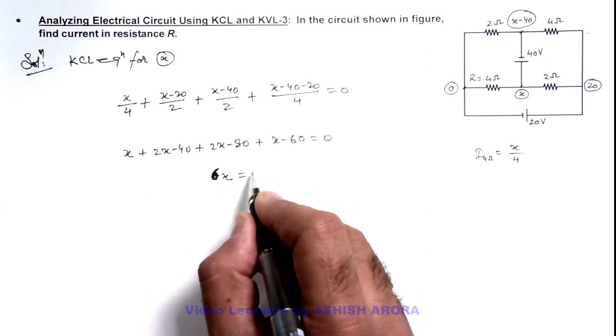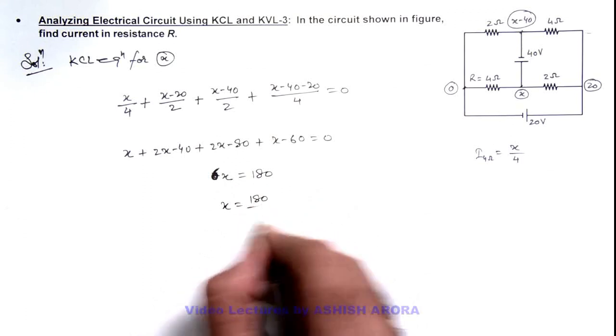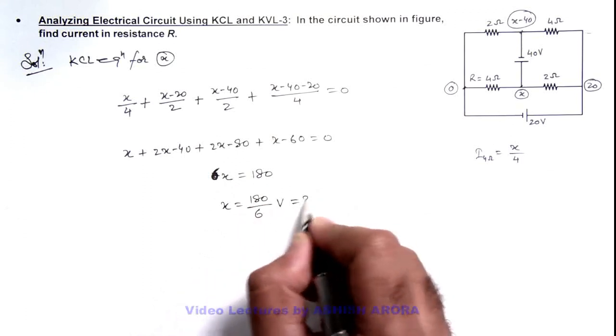We are getting 180. The value of x we are getting is 180 by 6 volt, that is 30 volt.